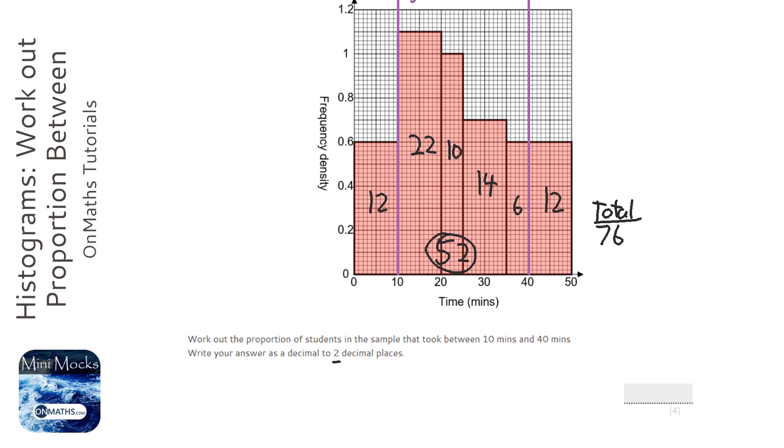So it says it wants it to two decimal places. So it doesn't want it as a fraction because as a fraction it's 52 over 76.